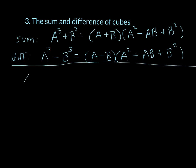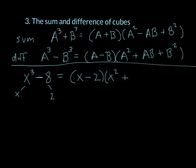For example, if I have x cubed minus 8, I write the cube roots of each term to find my a and b values. My a would be x and my b would be 2. Because I have subtraction, I use the difference formula: x minus 2, times x squared plus 2x plus 4, where 2x comes from a times b and 4 comes from b squared.